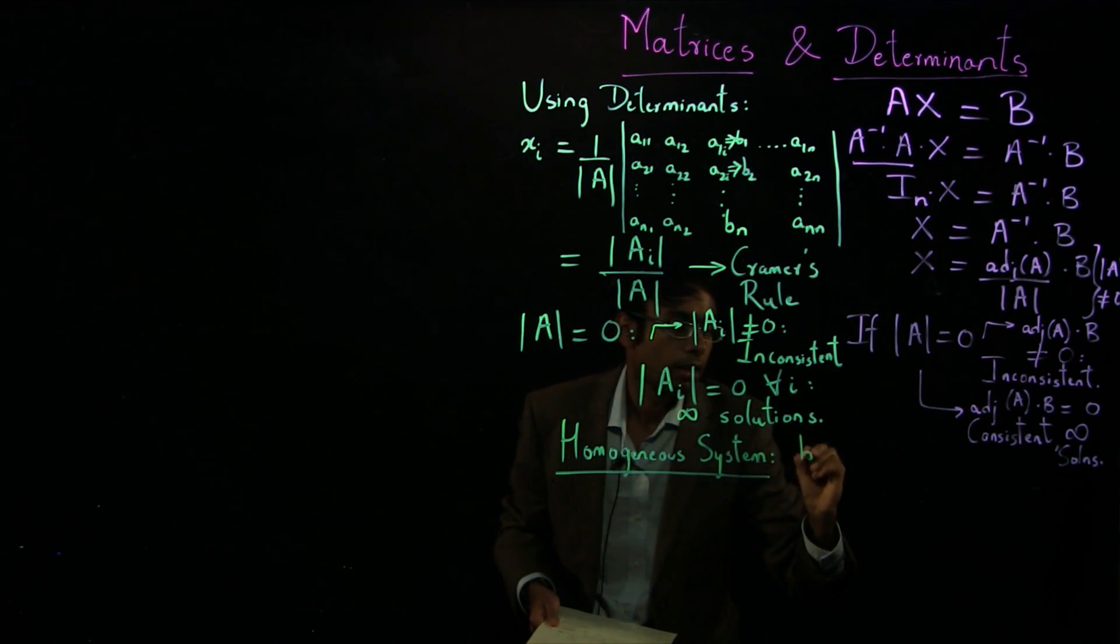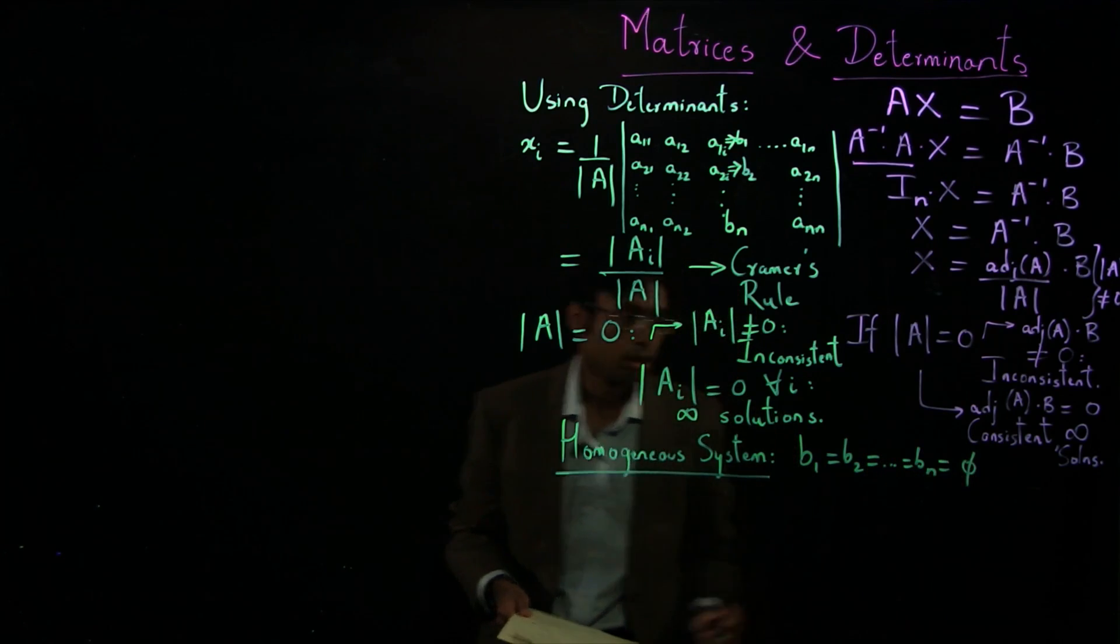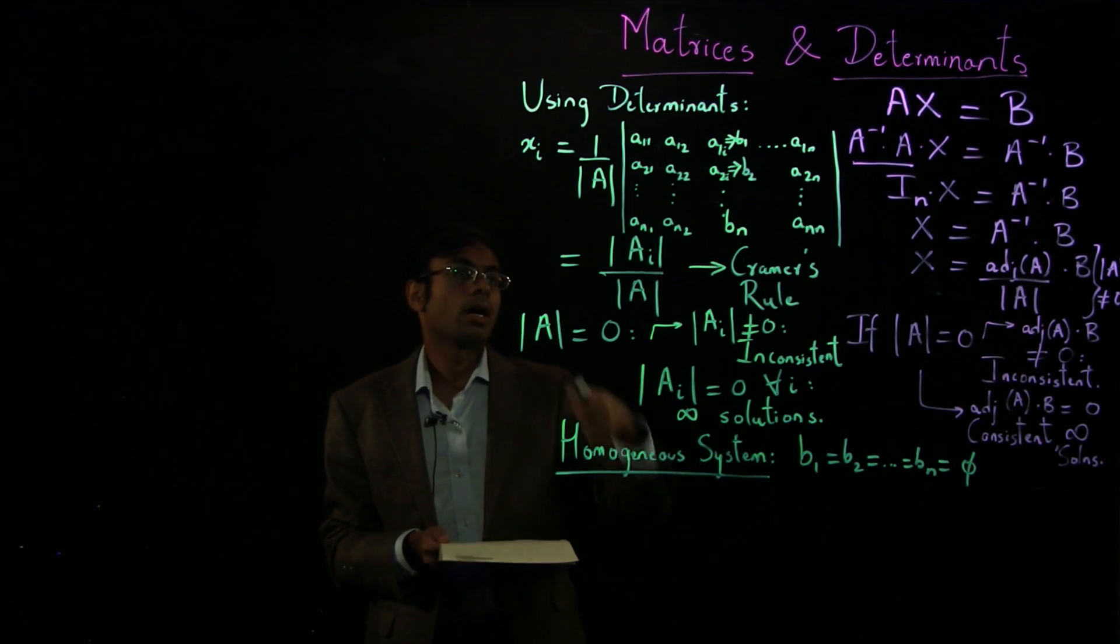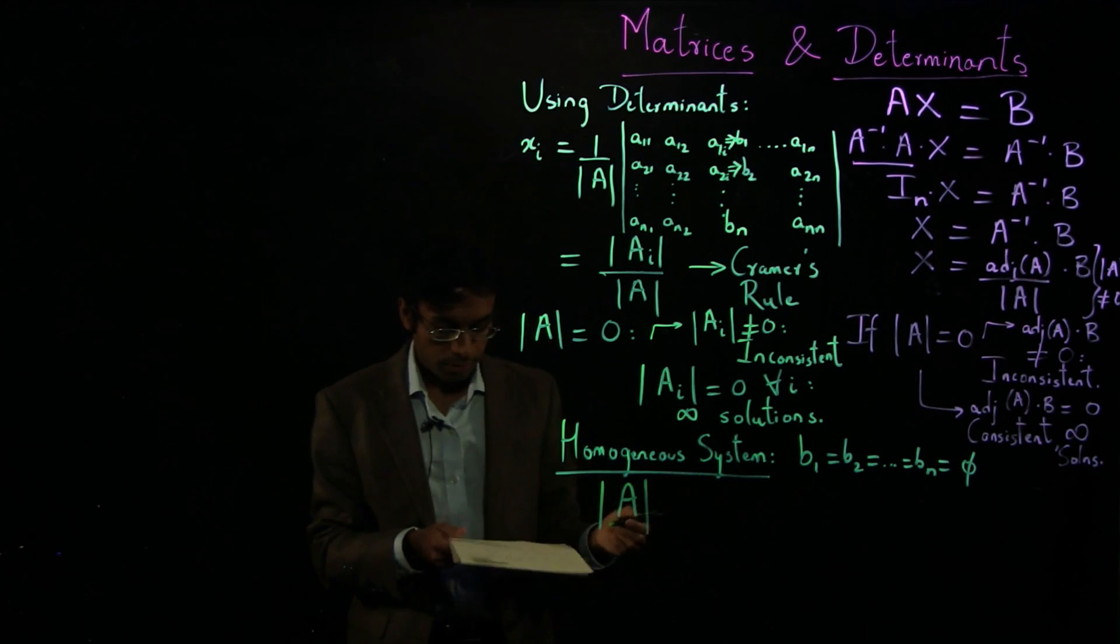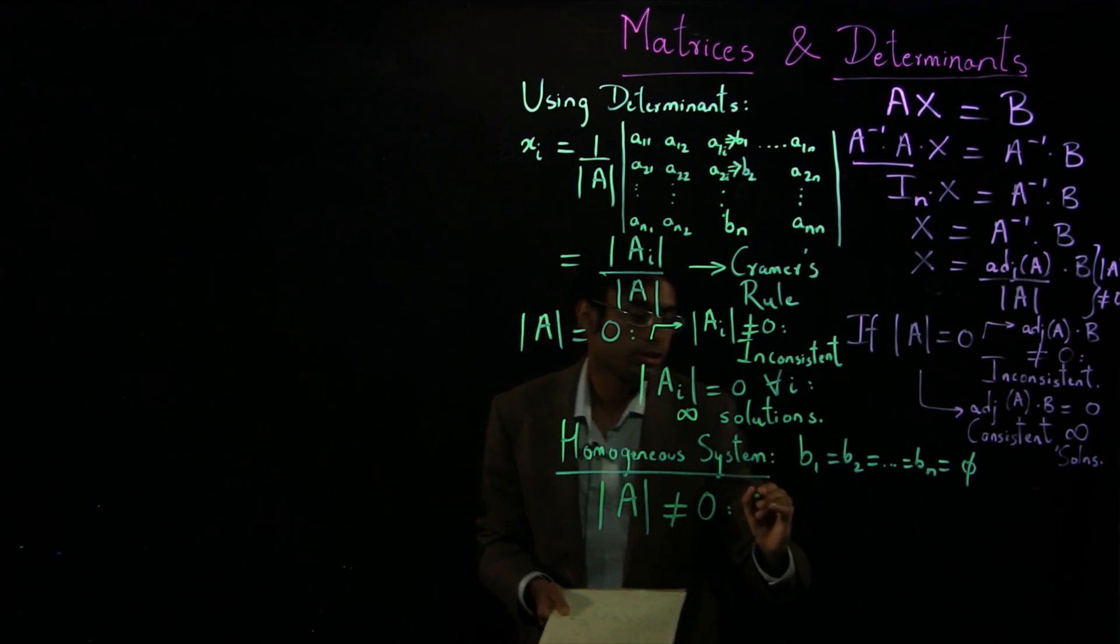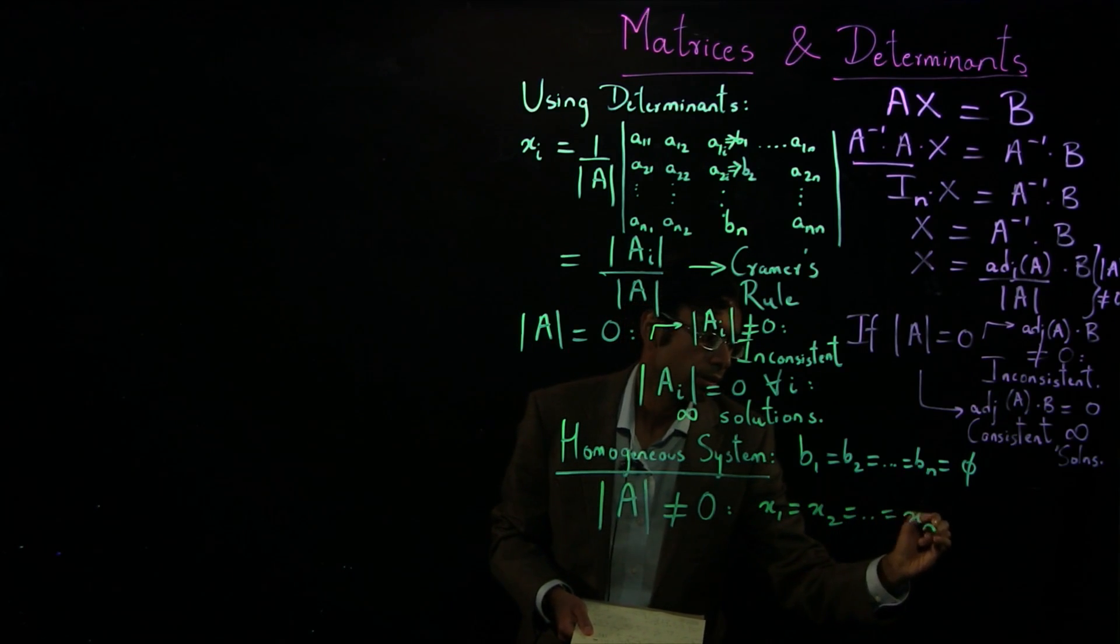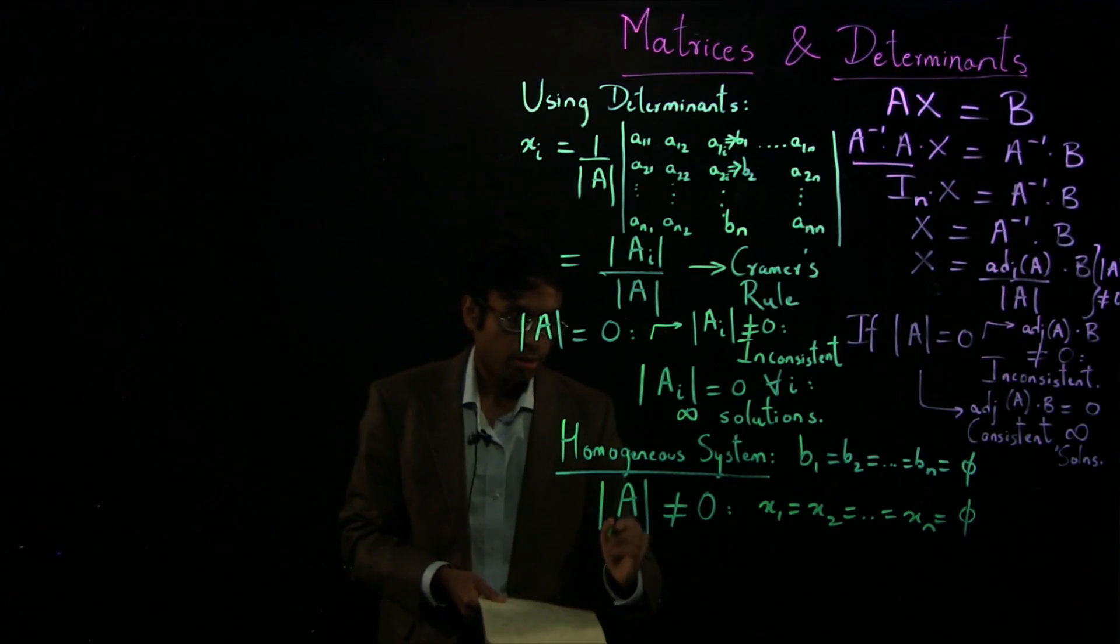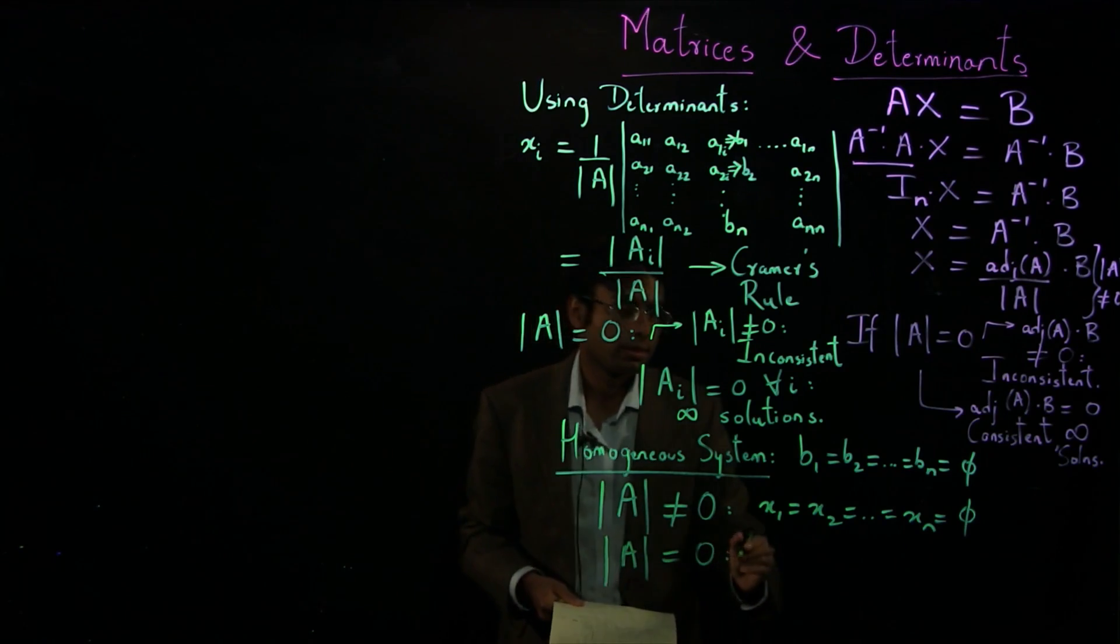Now the only thing to look at that is remaining is the homogeneous system, which means that every single one of the right-hand side is zero. Again, we can look at it using this method. For example, if the determinant of A is non-zero, there is only a trivial solution, which means every single variable, x1, x2, all the way to xn, is zero. But if the determinant is zero, then there is an infinite number of solutions.